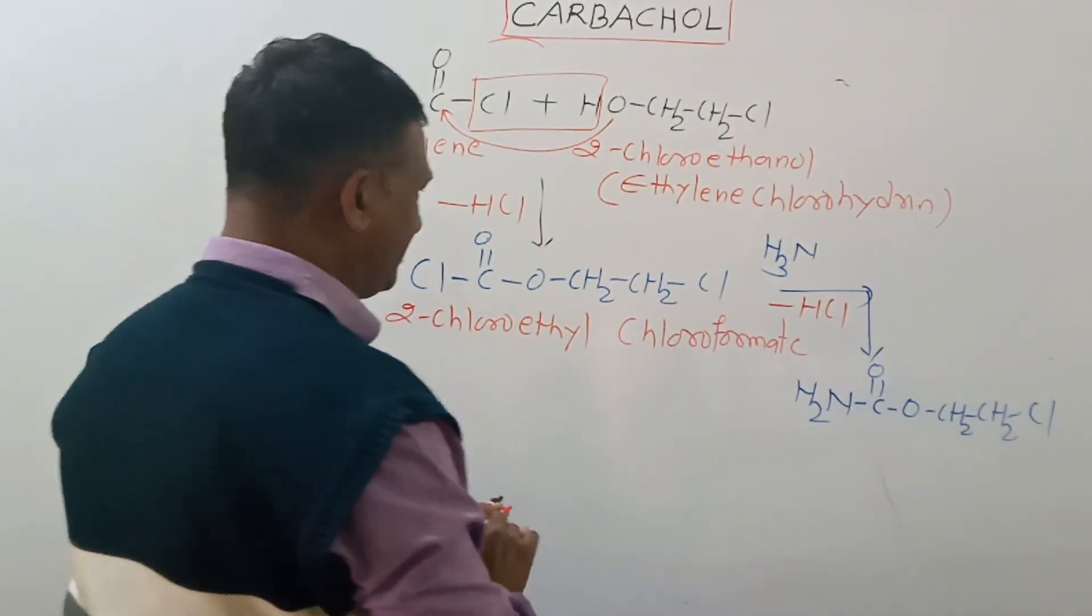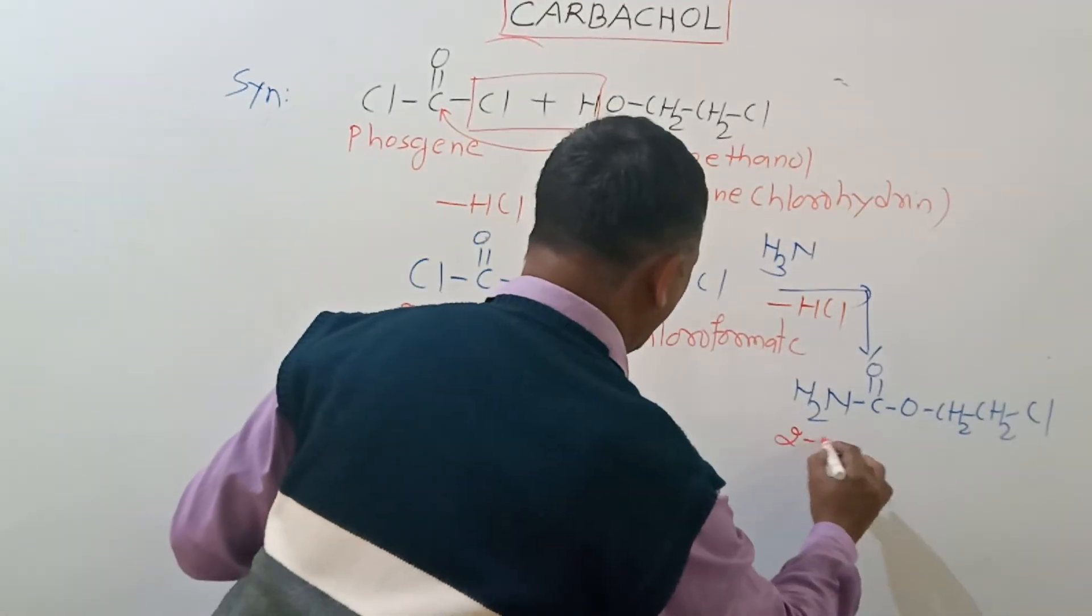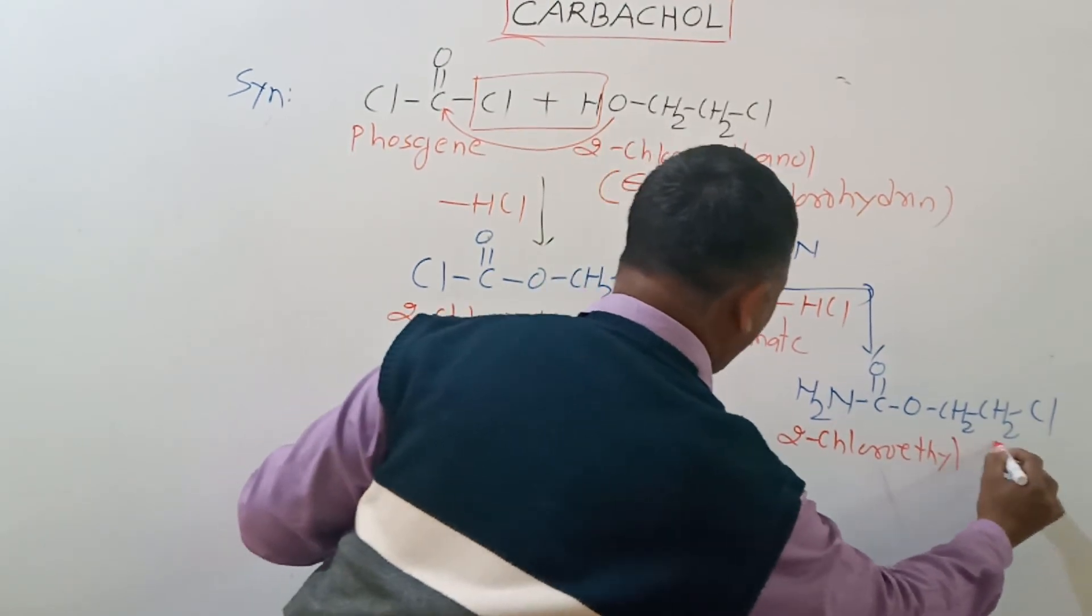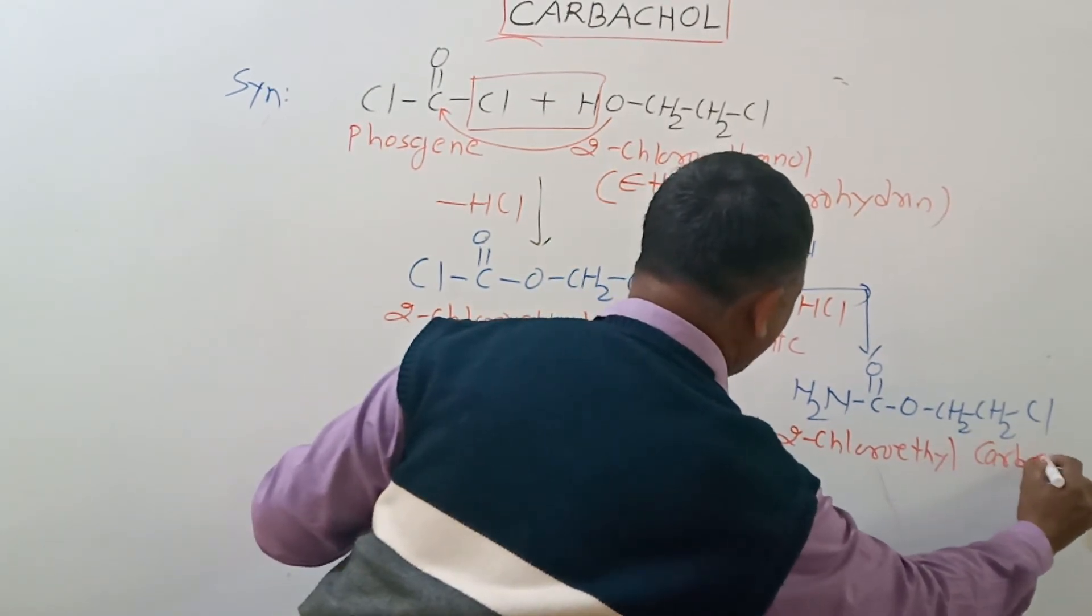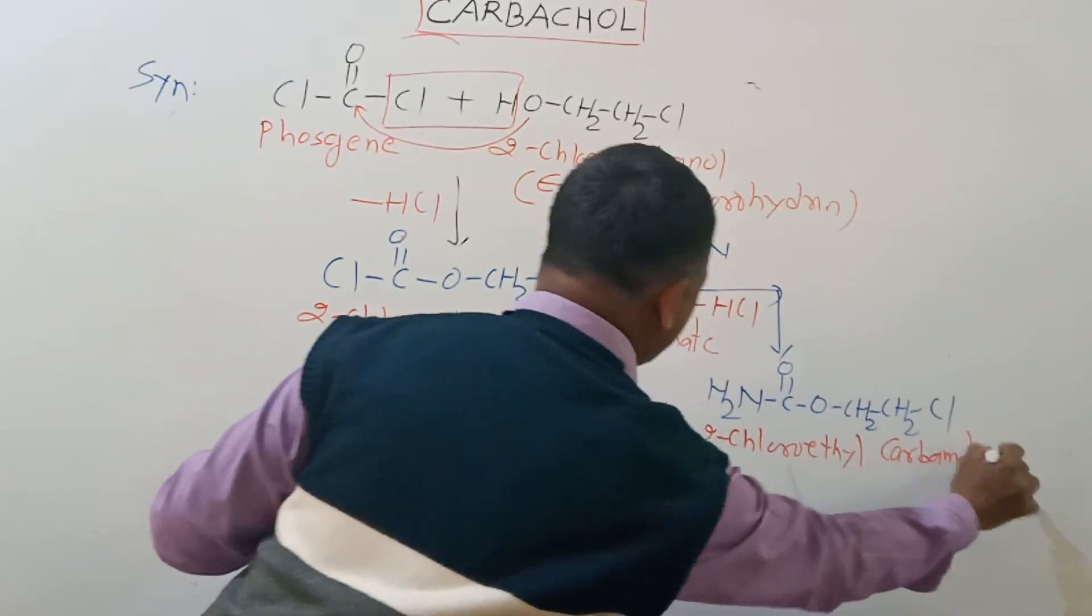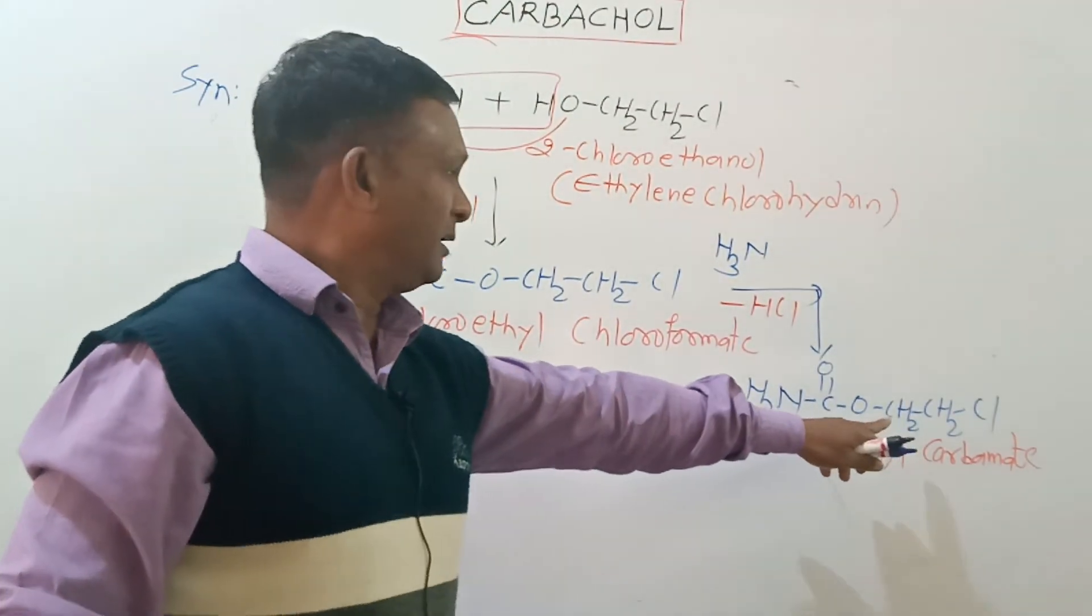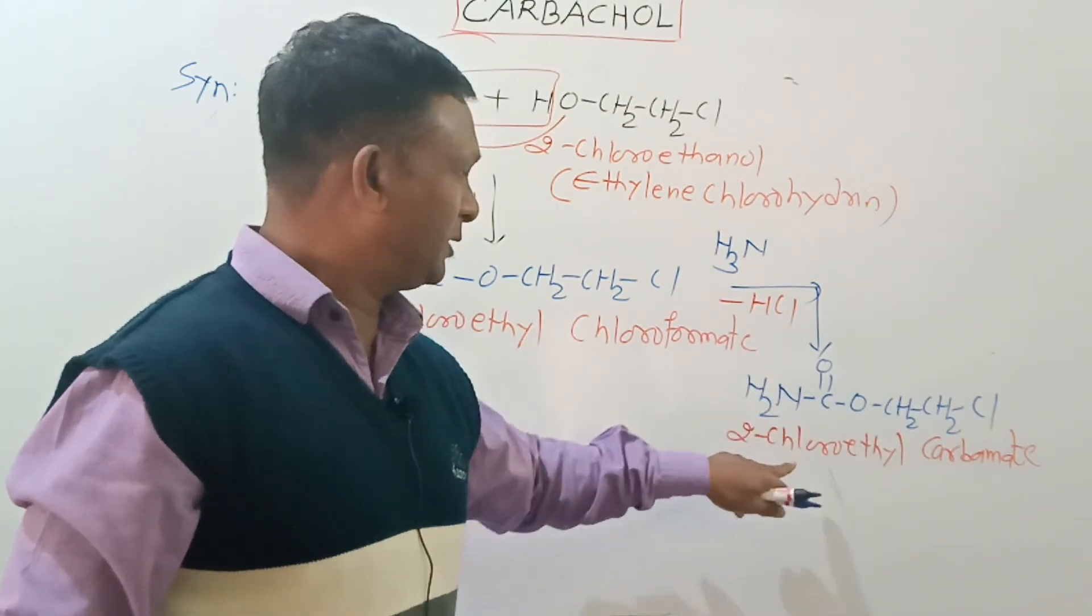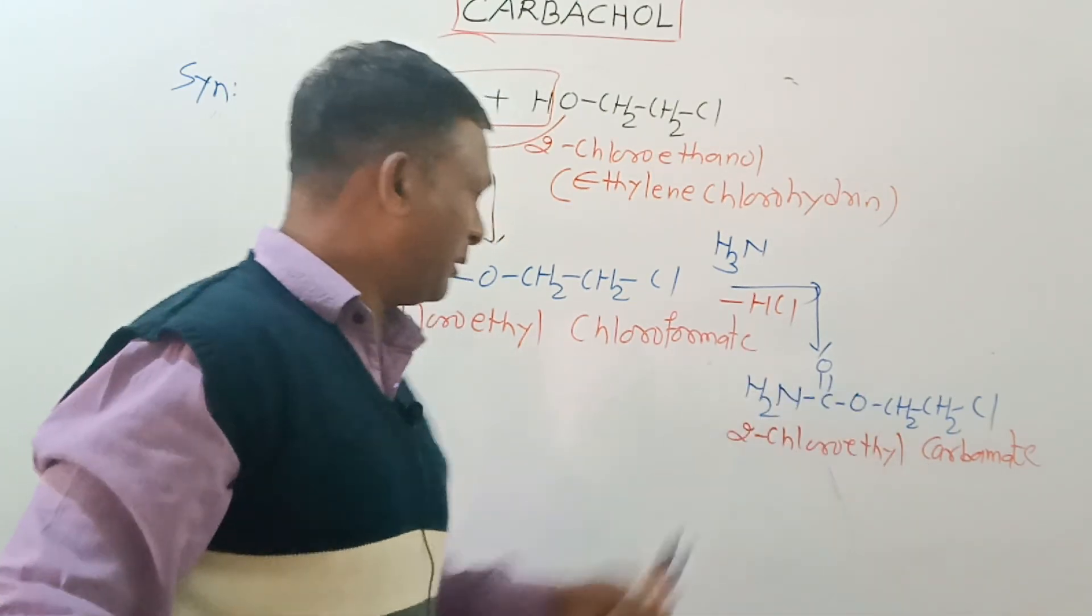Which is called 2-chloroethyl carbamate. It is the ethyl ester of carbamic acid, so it is called 2-chloroethyl carbamate.